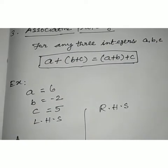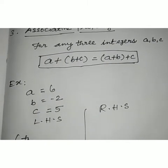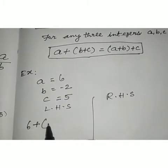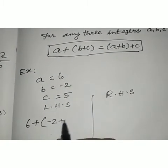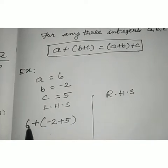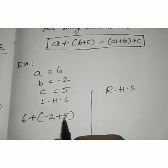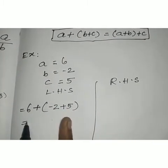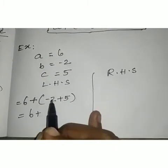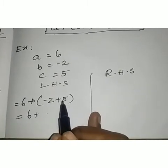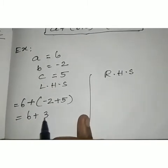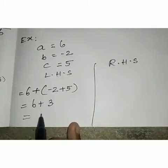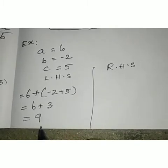Left hand side: a plus (b plus c). So 6 plus (minus 2 plus 5). Inside the bracket: minus 2 plus 5 equals 3. So 6 plus 3 equals 9.